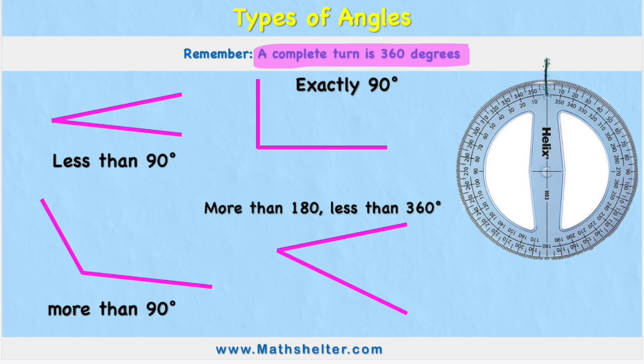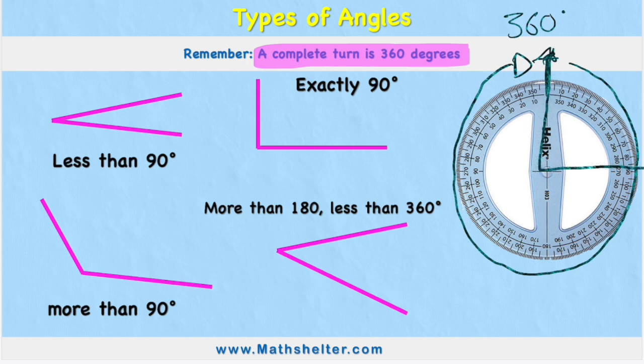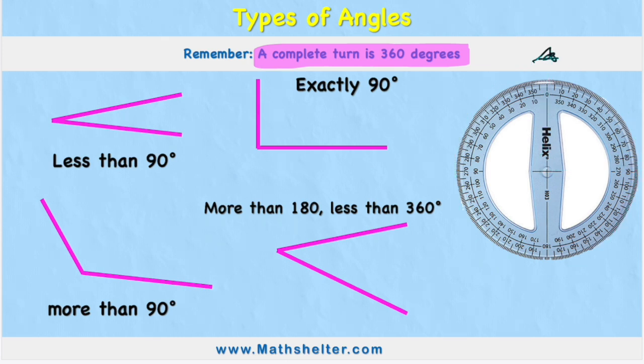For example, if I was starting here looking at my protractor, I could turn all the way around and spin this all the way around and I would turn exactly 360 degrees. But sometimes I don't turn that amount. Sometimes I might turn a smaller amount and I need to work out what that angle is. So luckily we have some names for these angles and I'm going to use my protractor here to help us see where they would be.